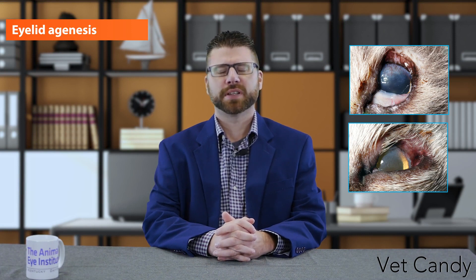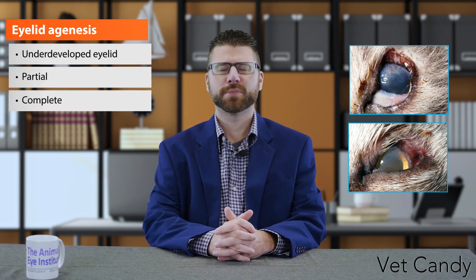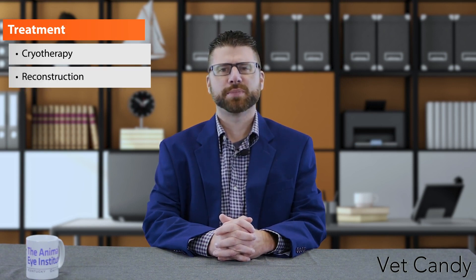Eyelid agenesis is a congenital abnormality seen most commonly in cats. It is an underdeveloped eyelid margin that is either partial or complete. Sequelae include exposure keratitis, trichiasis, and corneal ulceration. Various treatments have been reported: cryotherapy to eliminate hairs, reconstructive blepharoplasties, a procedure known as an eplilid where a portion of the outer commissure of the lip is rotated to create the lateral canthus, and a newer switch flap procedure where a portion of the lower lid is swung to the upper eyelid to recreate an eyelid margin.